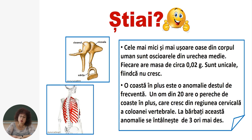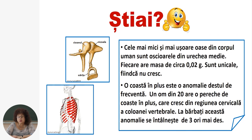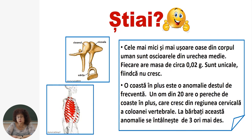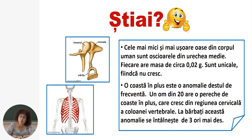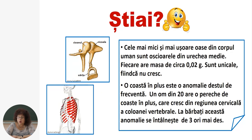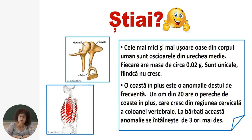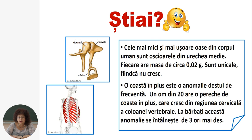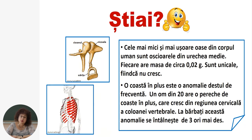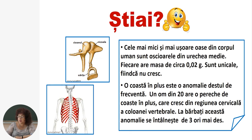Aceste oase sunt unice fiindcă nu cresc. O coastă în plus este o anomalie destul de frecventă — un om din 20 are o pereche de coastă în plus. De regulă, această pereche crește din regiunea cervicală a coloanei vertebrale. La bărbați această anomalie se întâlnește de trei ori mai frecvent decât la femei.